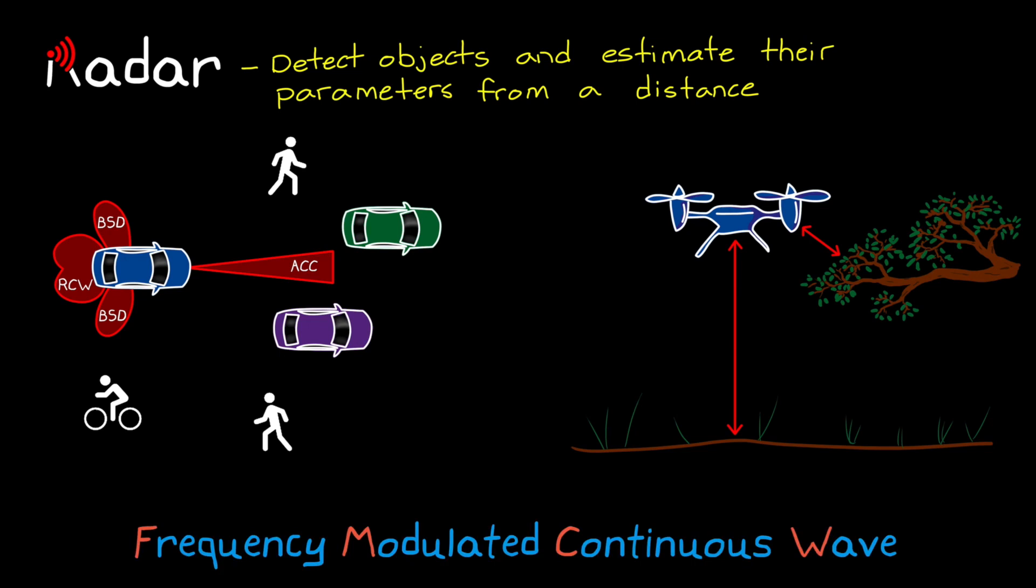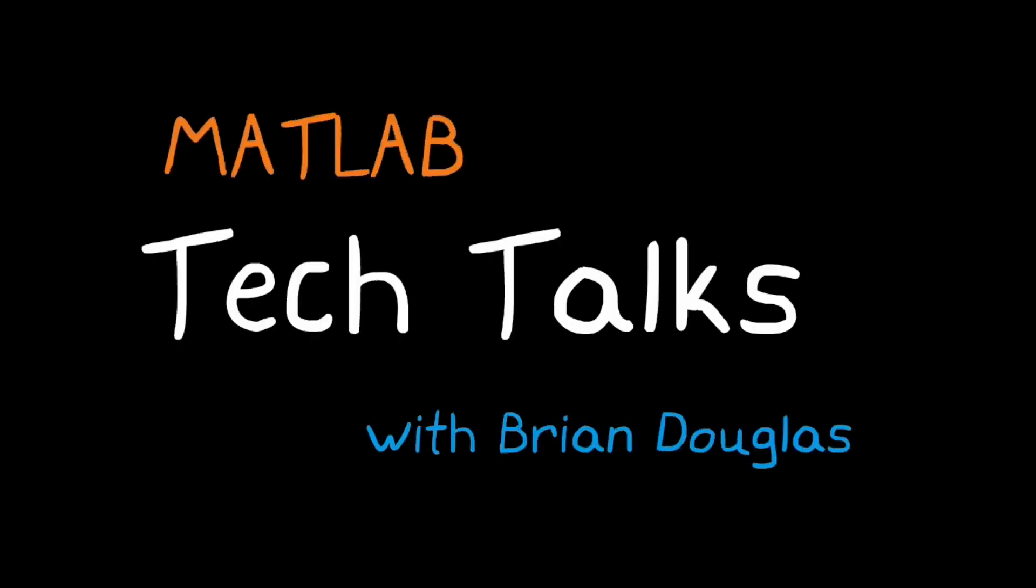What I want to do in this video is talk just a little bit about why FMCW is a good solution for autonomous vehicle applications. But mostly I want to try to build up a little intuition around how FMCW radar can measure range and radial velocity for multiple targets all at once. I'm Brian, and welcome to a MATLAB Tech Talk.